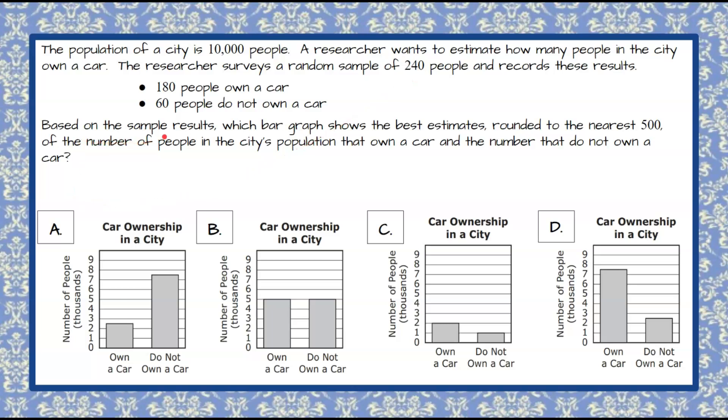Based on the sample results, which bar graph shows the best estimates rounded to the nearest 500 of the number of people in the city's population that own a car and the number that do not own a car.